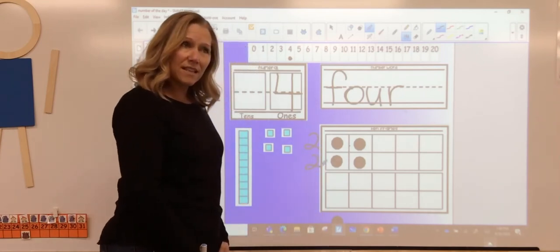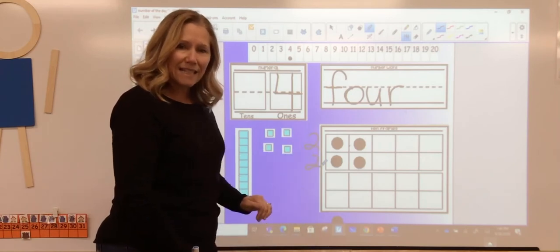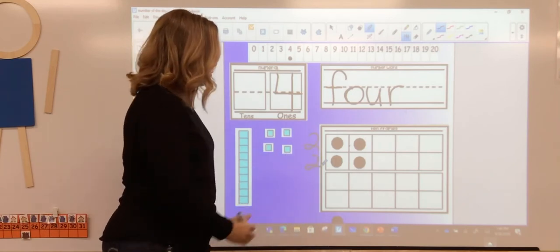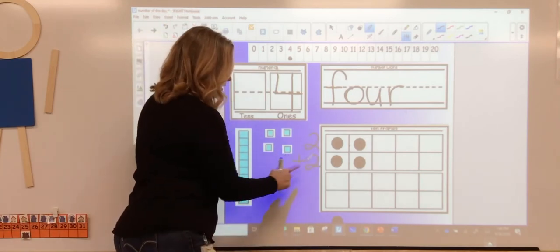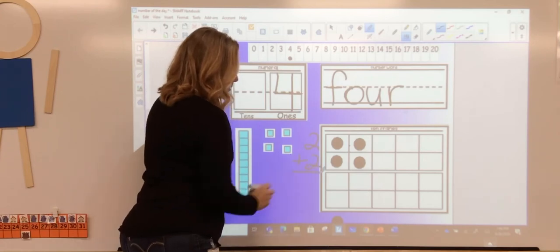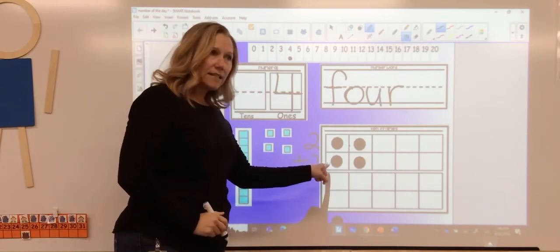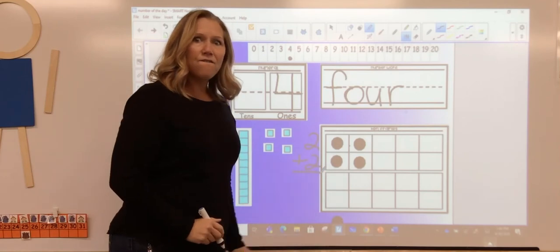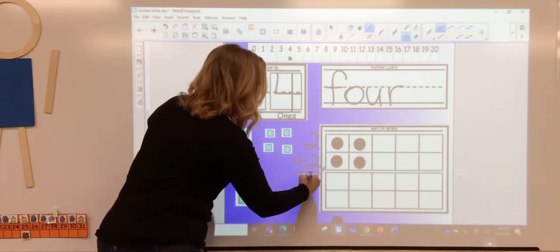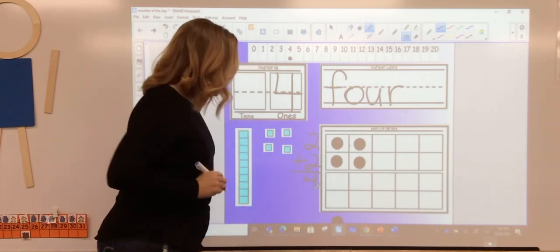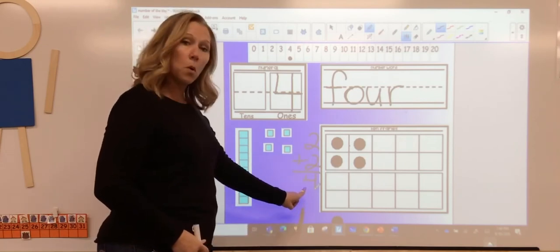So friends, if I want to make this a math sentence, it's going to look like this. Two plus two equals how many did we count? Four. Good job. So then I'm going to put my number four there. So two plus two is four.